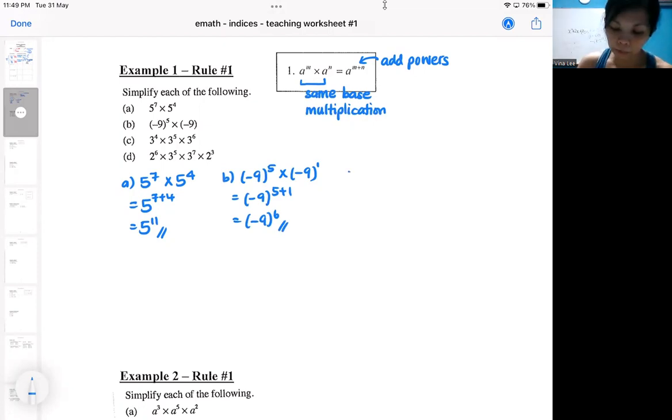So if you've got three multiplications, not to worry, it's just that you're going to multiply the base a lot of times. So you simply add the power.